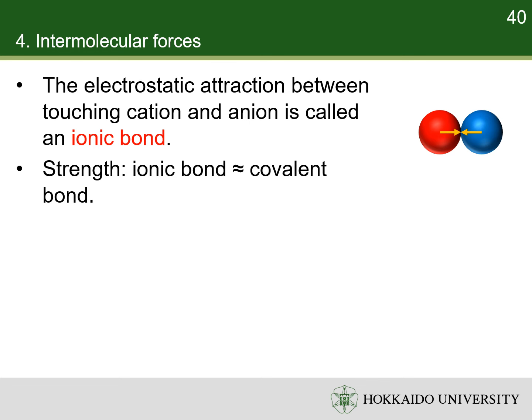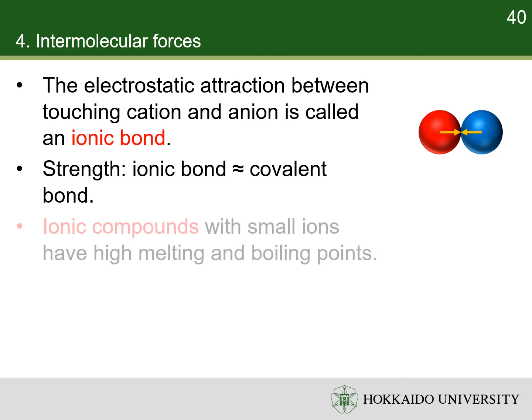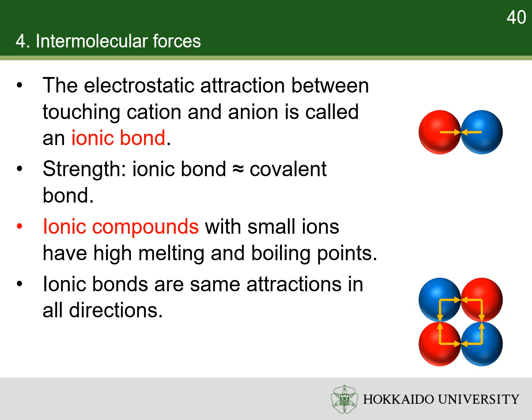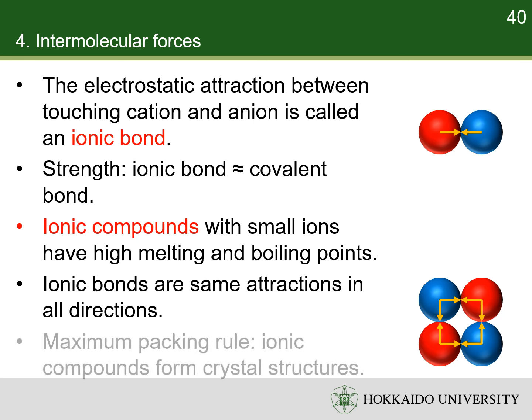For small ions, the ionic bond is as strong as a covalent bond. Therefore, a lot of energy is required to break the ionic bond apart. A compound made of ions is an ionic compound. Ionic compounds with small ions have high melting and boiling points due to their strong ionic bonds. On the other hand, unlike covalent bonds, ionic bonds are the same attractions in all directions. Thus, the geometry of ionic compounds follows maximum packing rules, and most ionic compounds exist in the form of a crystal structure.